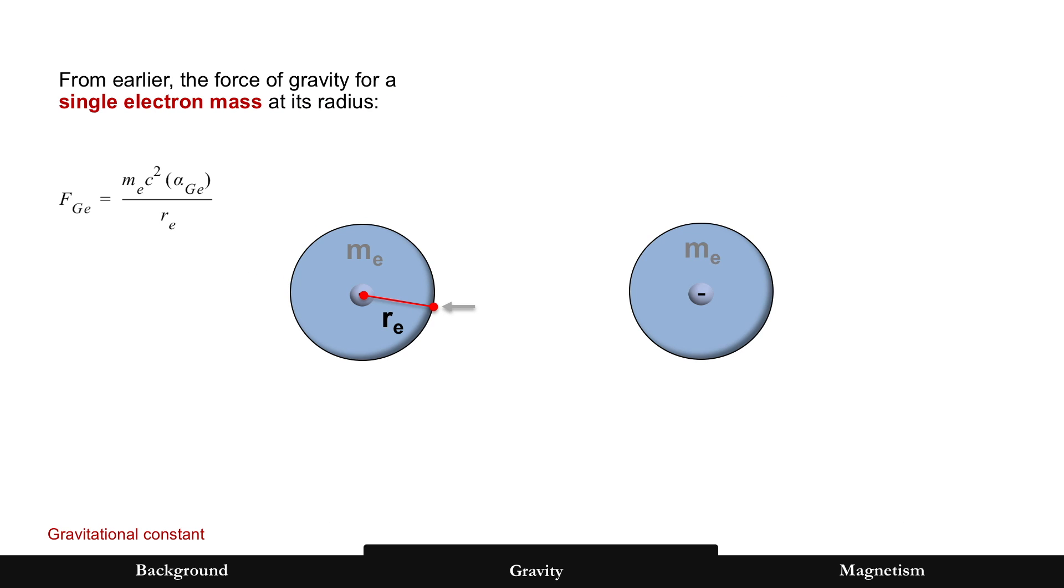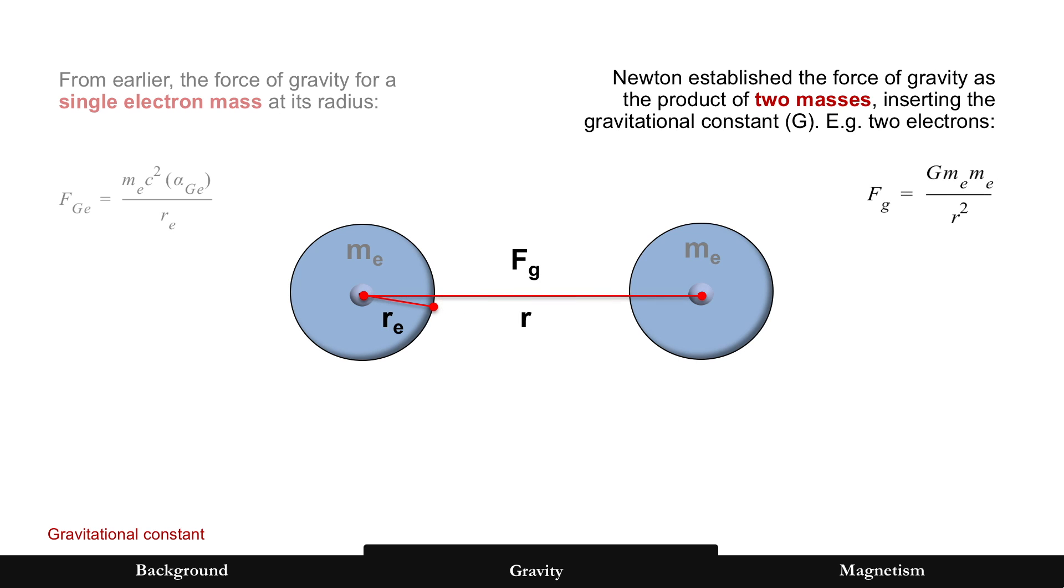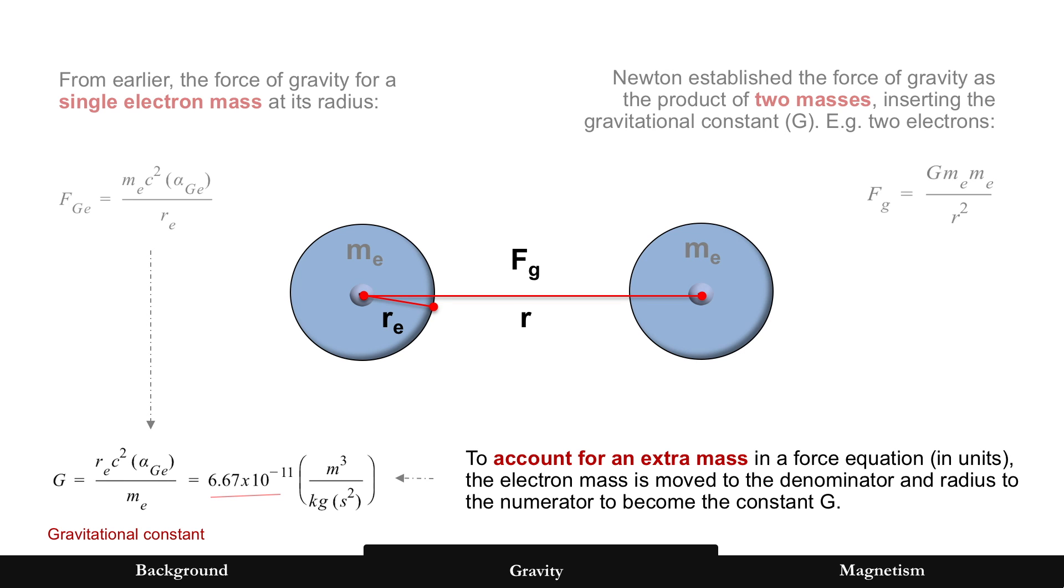That explains why we see it in large bodies. Okay, from earlier, the force of gravity for a single electron mass, remember this one? At its radius was that. That's a force equation. Now, Newton established the force of gravity as a product of two masses, and he had to insert the proportionality constant, gravitational constant, known as g. So, for example, two electrons. You see g in the mass of two electrons and separated by its radius there. Well, that's a problem for a force equation, which in units has one mass. And so, you have to account for that in the proportionality constant, g. So, how do you solve for that? You take that force equation in the top left. You bring the mass down to the denominator and the radius up to the numerator. And now, the masses cancel out in terms of units. And what do you get? You get the derivation now of the gravitational constant in both value and also units, and with an explanation now for the constant g.